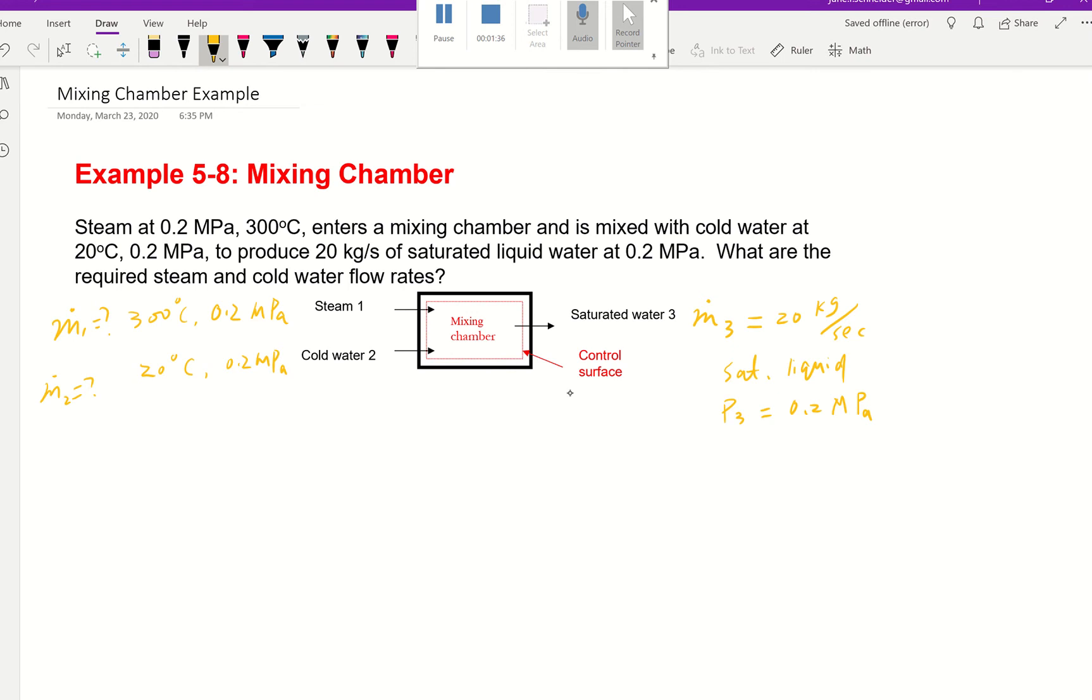For two inlets and one outlet, mass conservation will be ṁ₁ + ṁ₂ = ṁ₃. Then our energy equation, we discussed in the last video if you haven't seen it make sure you go back to that, will be ṁ₁h₁ + ṁ₂h₂ = ṁ₃h₃. So those are the two equations.